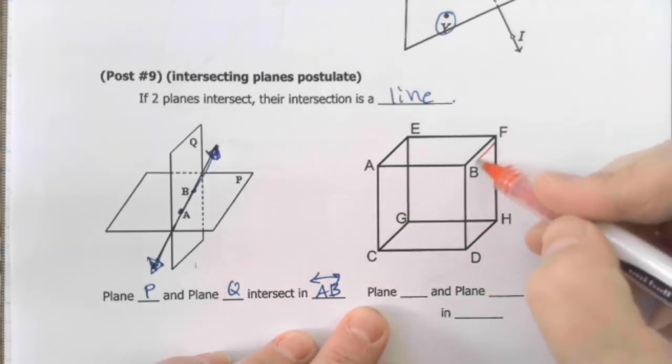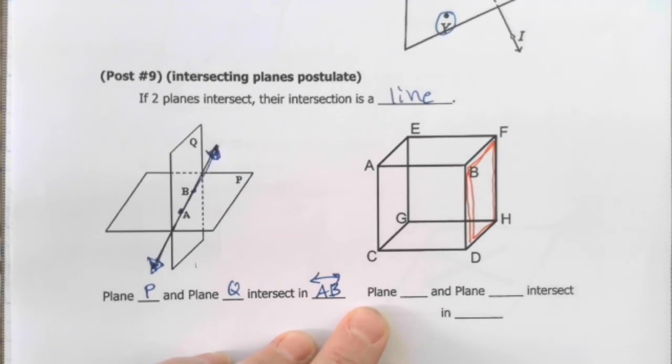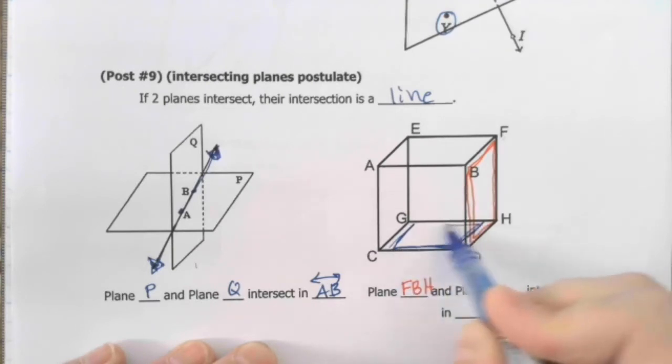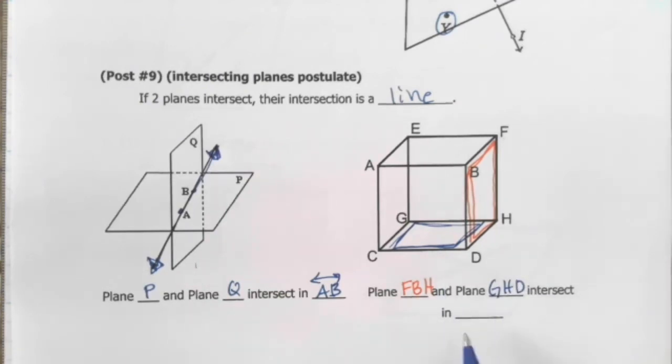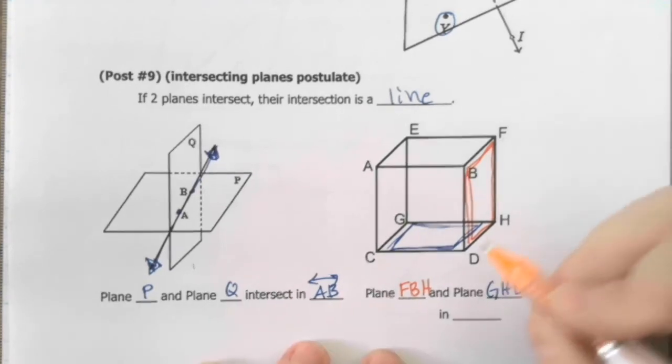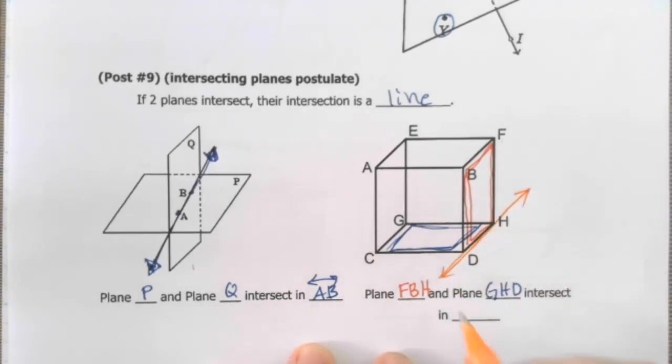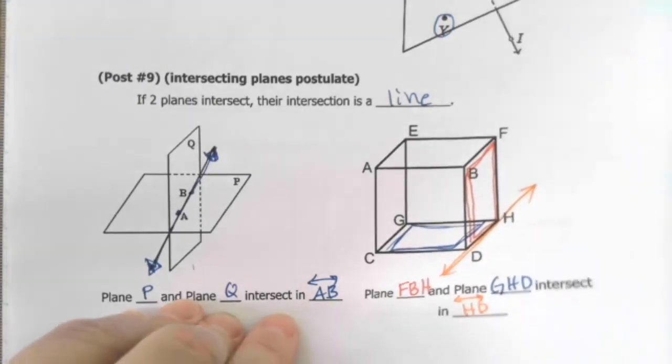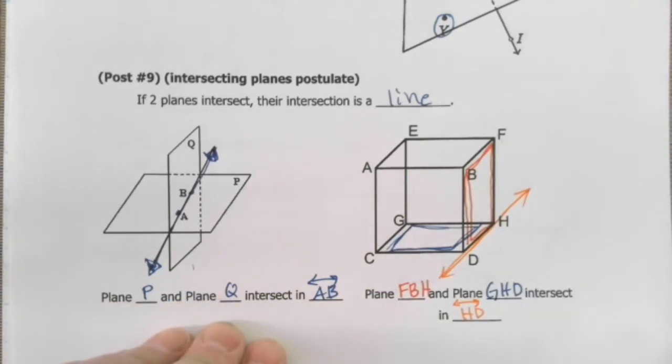Plane, we're going to do this side plane here. When you name a plane like this that doesn't have really a name in the corner, you have to name it with three points on the plane. So I'm just going to pick F, B, and H. So plane F, B, H, and plane, and I'm going to use the bottom one now, this one here. So I'm going to use three letters, G, H, D. These two planes intersect in, and the line they intersect in is right there. So it's line H, D. So in a cube, you have lots of planes that intersect in lots of lines. There's one of those on your worksheet that you need to be able to do. So refer to this if you get stuck.